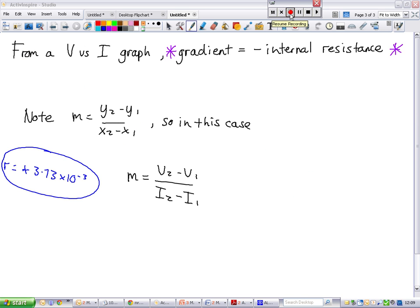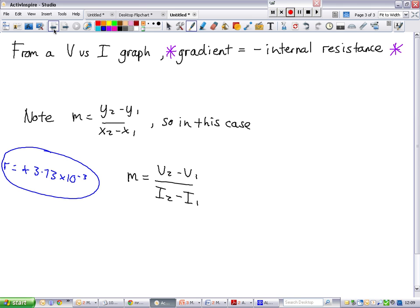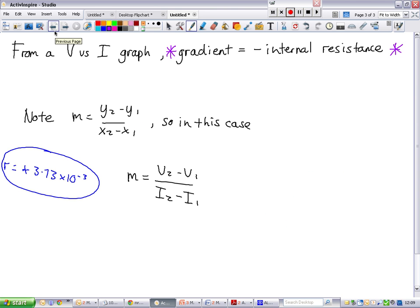So if we want to calculate internal resistance from the graph that we looked at previously, if we want to calculate it from this graph, then we take the gradient of that graph. That gives us a negative value of internal resistance. So gradient is equal to negative of internal resistance. We got a value of negative, or some people got a value of negative around 3.73 times 10 to the negative 3, which means that your internal resistance is 3.73 times 10 to the negative 3. And that will be in ohms.